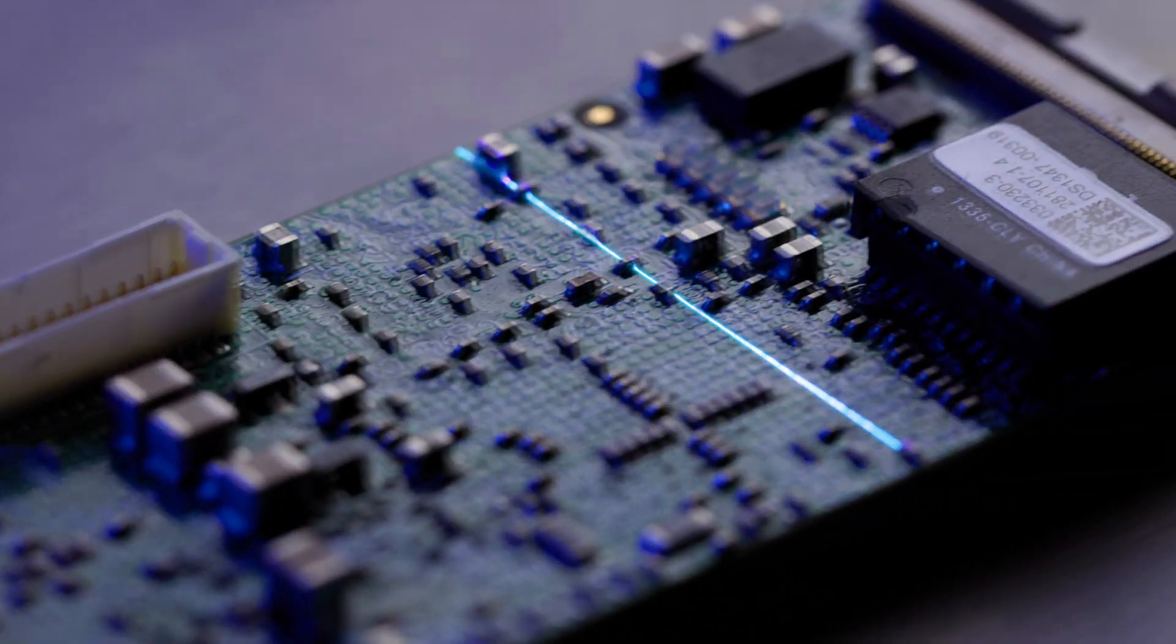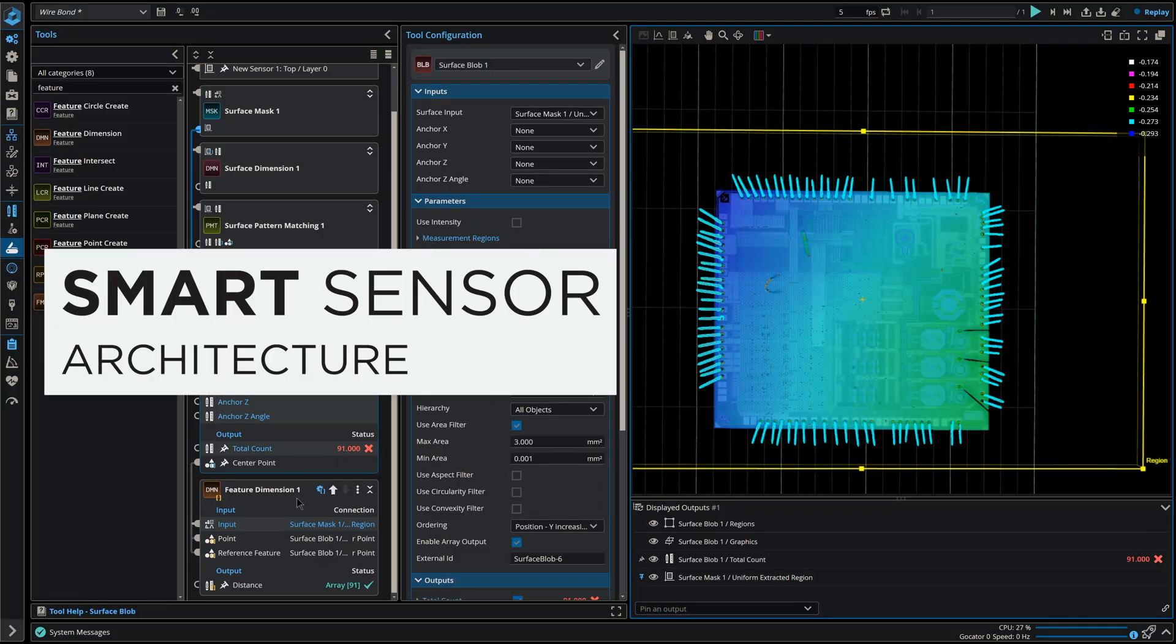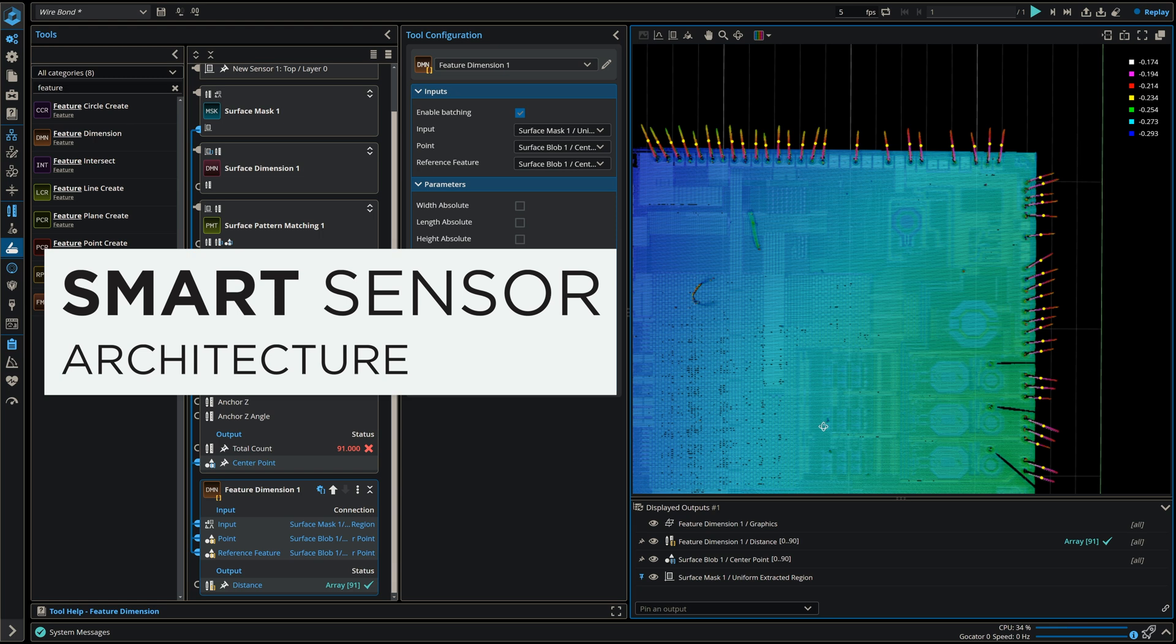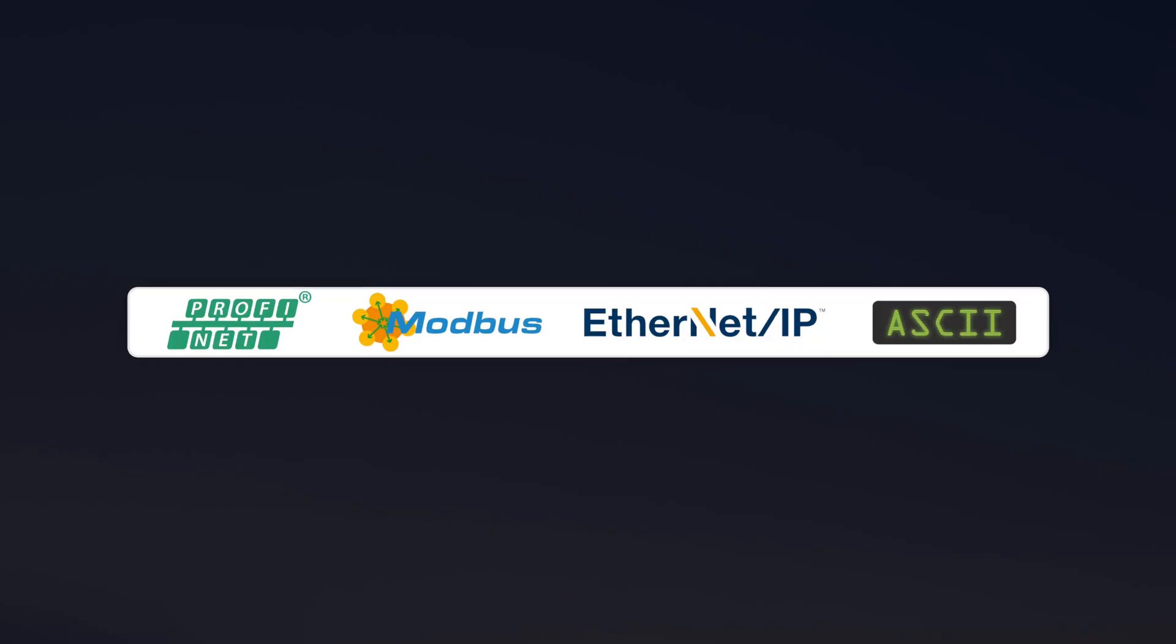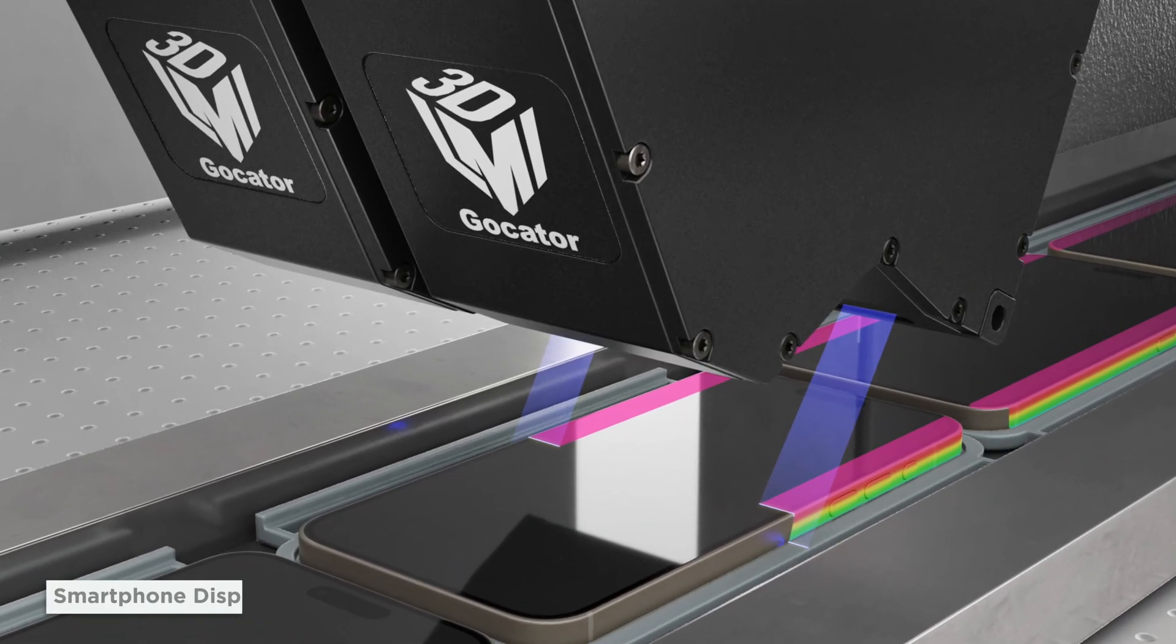And like all Gocator sensors, the 6300 series is built on LMI's smart sensor architecture. Benefit from an intuitive web interface, onboard measurement tools, I/O connectivity and seamless multi-sensor networking, all in one cost-effective package.